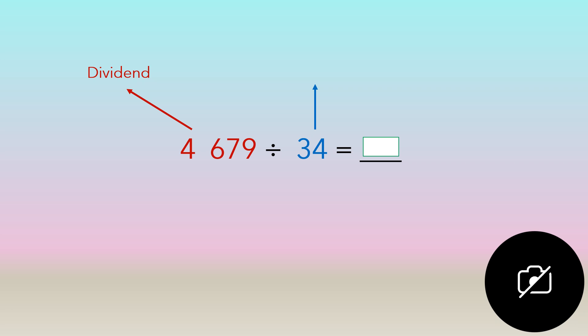If we look at thirty four, thirty four is the divisor. We want to find out how many groups of thirty four can make up that whole number. The last part is the answer, and the answer is called the quotient. You need to know this terminology because in the exam they can ask you to solve for the quotient, or what is the divisor, or which number is the dividend.